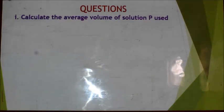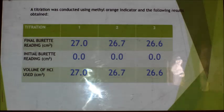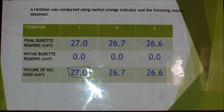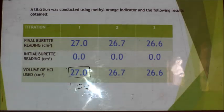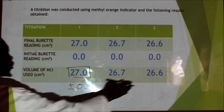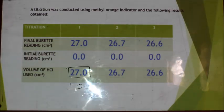The first question asks us to find the average volume of solution P used. Referring back to the table, we are not going to consider one figure in our calculation because the value is outside our range. The values to be averaged must be within a range of plus or minus 0.2. If you look at 27.0 and 26.7, the gap is 0.3; 27.0 and 26.6 gives a gap of 0.4 — both outside the range. But these two values only have a gap of 0.1, so they qualify.